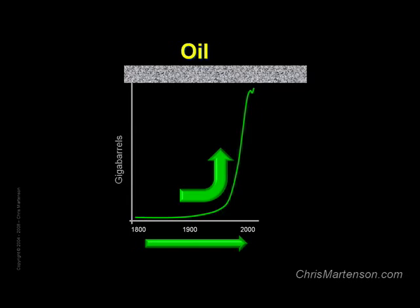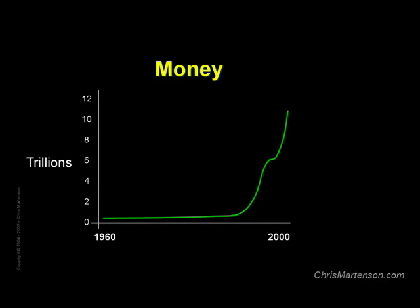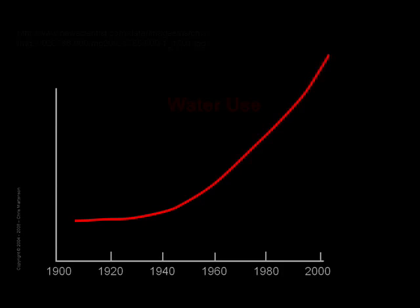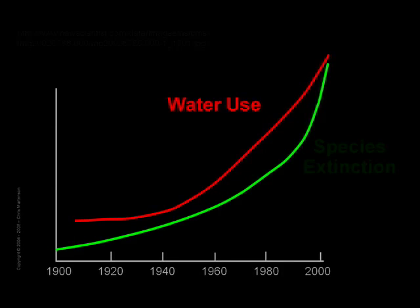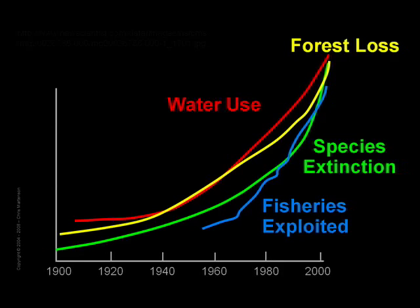Here's the U.S. money supply, which has been compounding at incredible rates ranging between 5 and 18% per year, so this chart only needs to be a few decades long to see this hockey stick effect. And here's worldwide water use, species extinction, fisheries exploited, and forest cover lost. Each one of these is a finite resource, as are many other critical resources, and quite a few are approaching their limits.